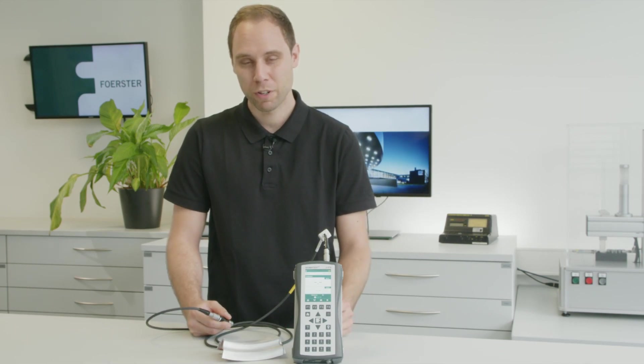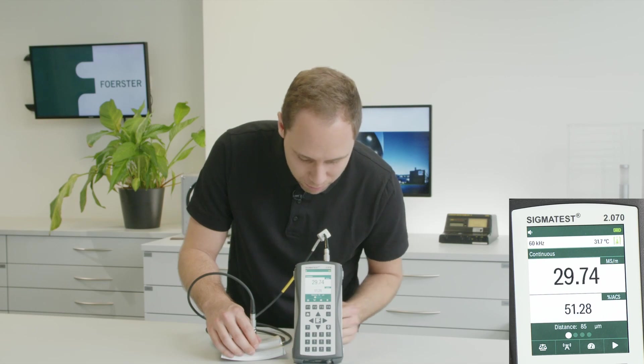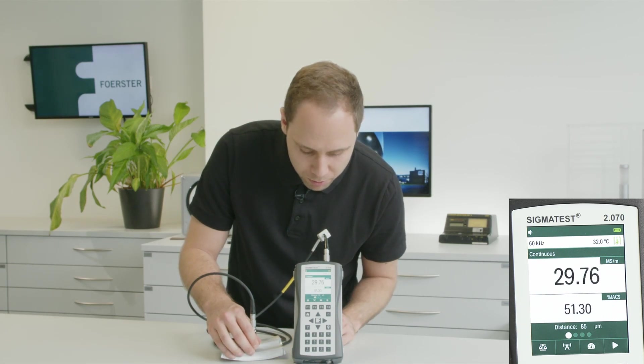Modern systems are calibrated under laboratory conditions. So when you get a device, you can directly start to measure. Let's try this out. We put the probe on the part and we directly get the measurement 29.75 Megasiemens per meter.